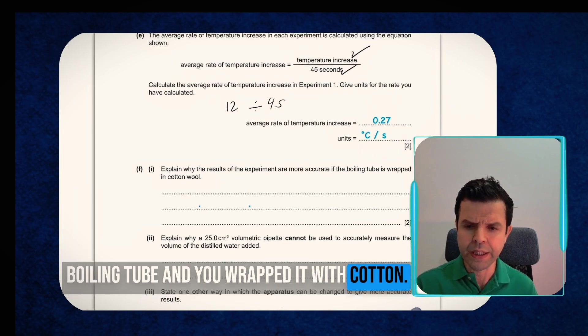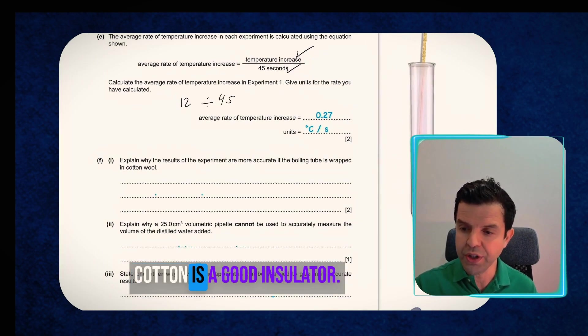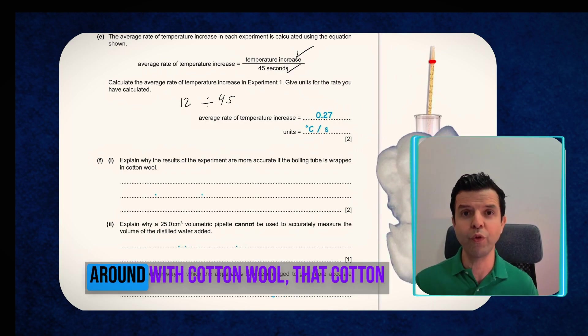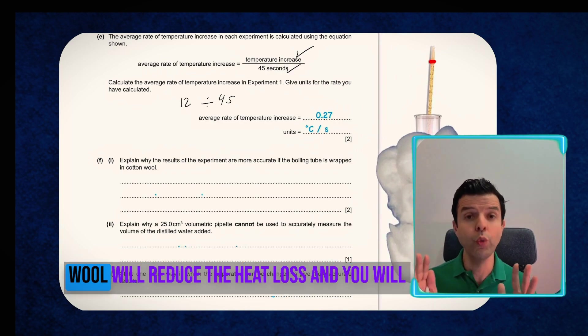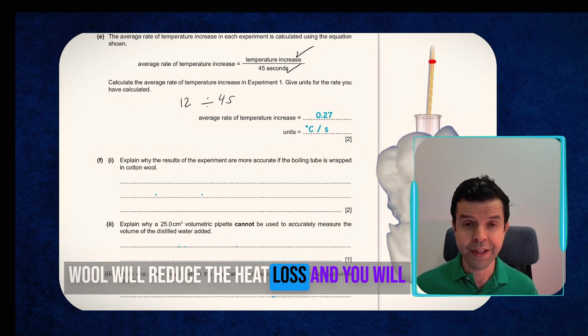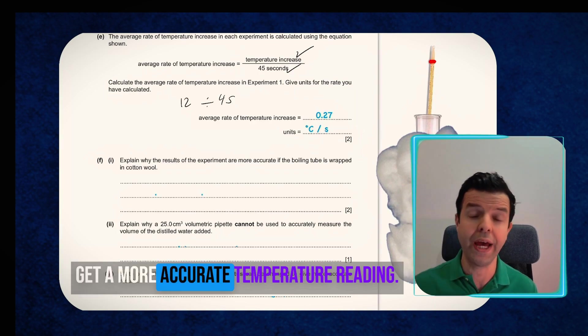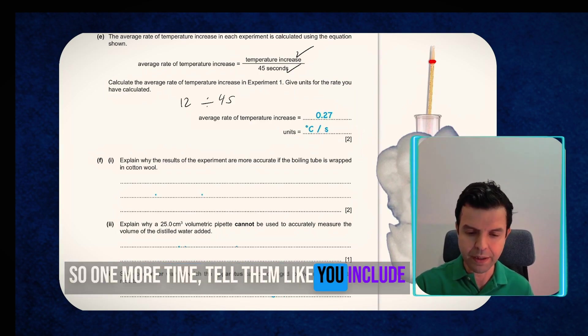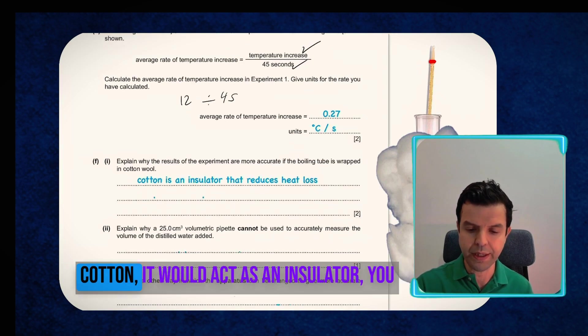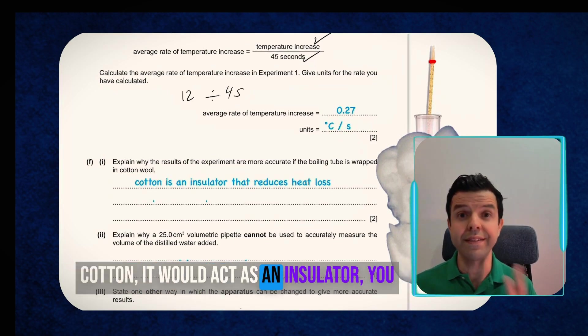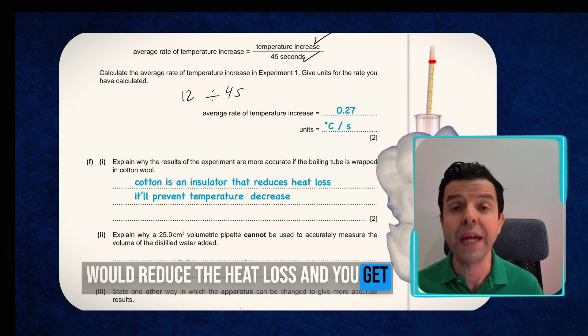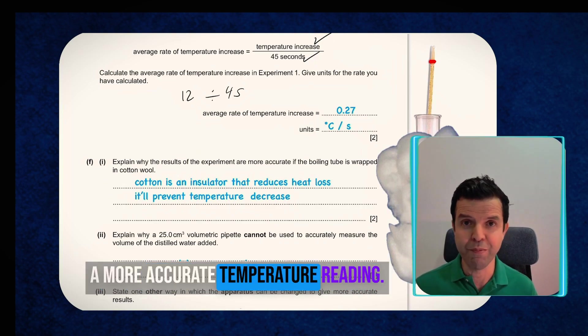Explain why the result of the experiment would be more accurate if you took the boiling tube and you wrapped it with cotton. You probably know that cotton is a good insulator. If I take the boiling tube and I wrap it around with cotton wool, that cotton wool will reduce the heat loss. And you will get a more accurate temperature reading. Tell them, you include cotton, it would act as an insulator. You would reduce the heat loss and you get a more accurate temperature reading.